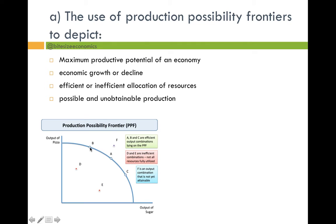Points B, A and C are what is known as efficiently producing goods. D and E, as you can see, are not at the curve of the PPF, which means they're not using all the factors of production available — so they are inefficient combinations. And point F is unobtainable because the PPF curve does not yet reach there, which means we can't yet produce at that point. However, if the PPF curve were to increase to where F is, then that would be efficient and obtainable.